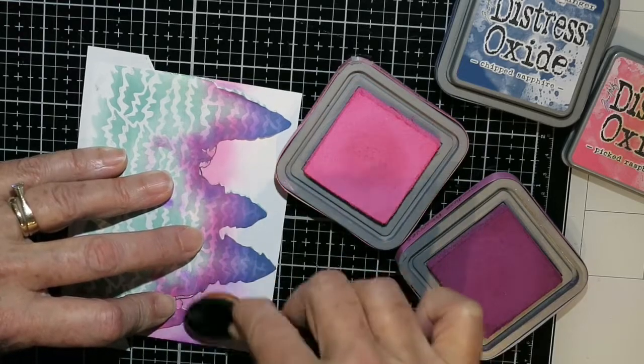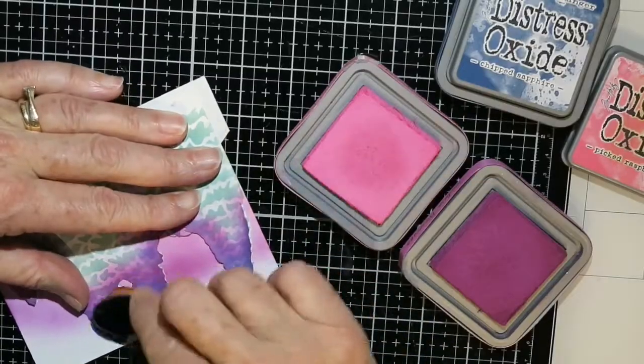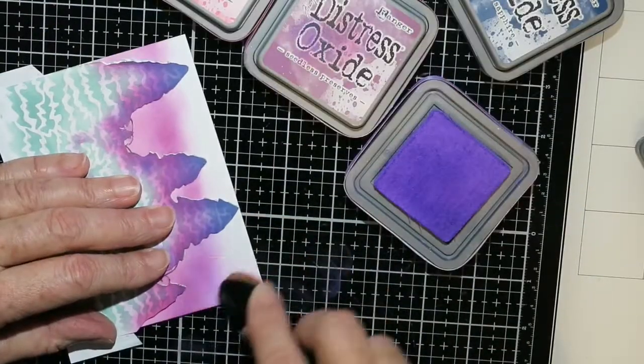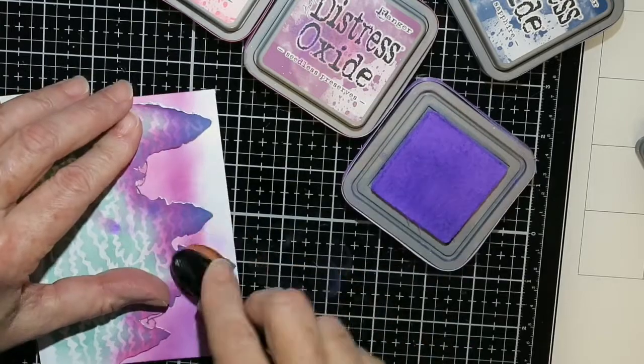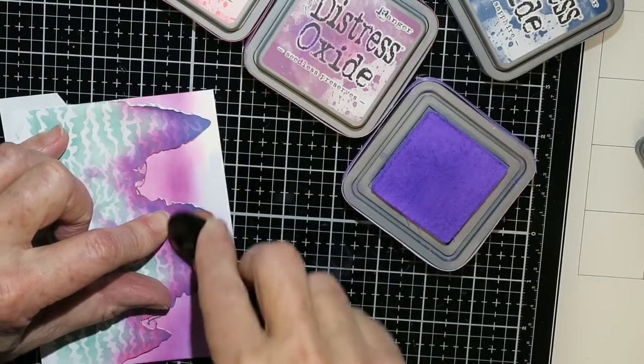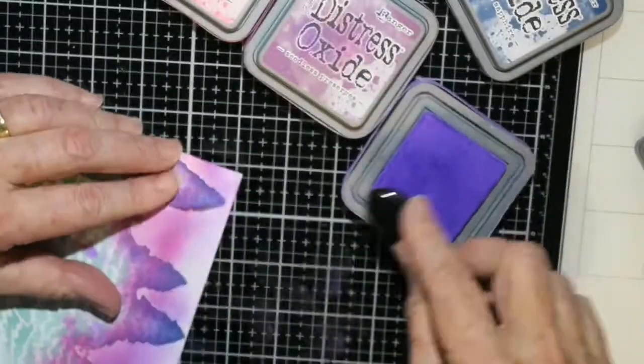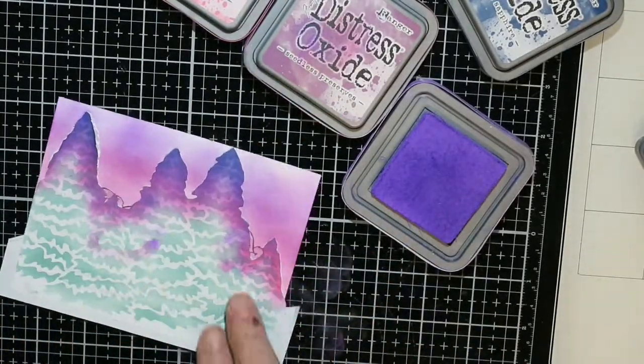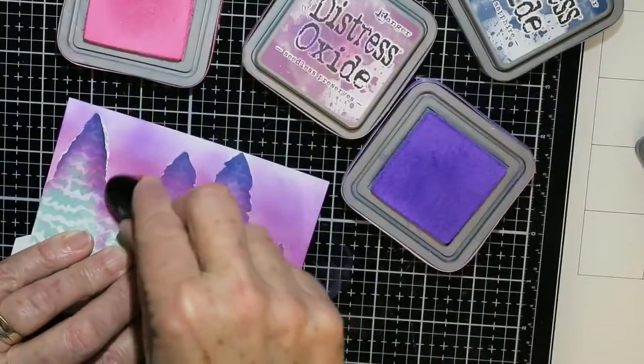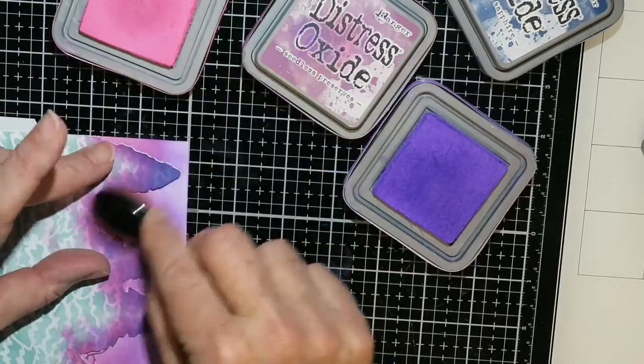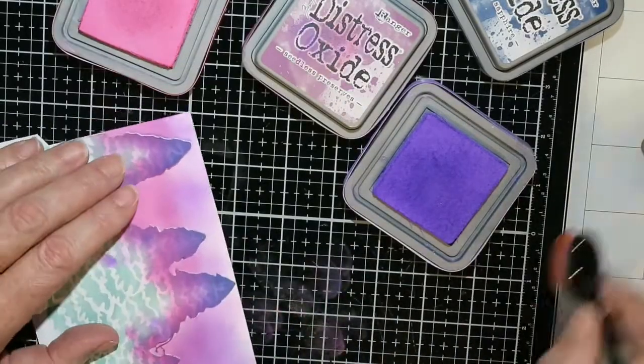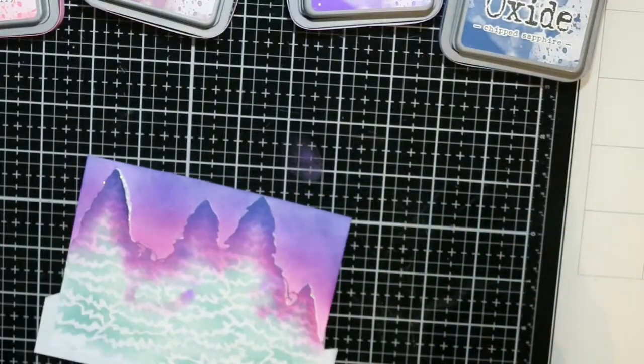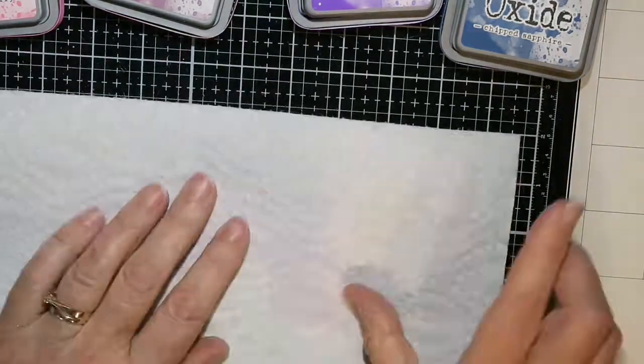This is seedless preserves. These were all the oxide inks, but I'm sure you could do the same with regular distress inks. I just happen to have these out on my desk. This is wilted violet that I'm doing the top of the sky with. Blending, blending, blending. And there I am, putting more of that picked raspberry. I just realized it wasn't really very dark down at the bottom. And then the last was this chipped sapphire, which I went all around the top, down the sides a little bit. And then I gave it a pretty good spritz with my mister and wiped it off.